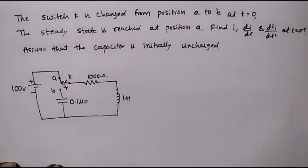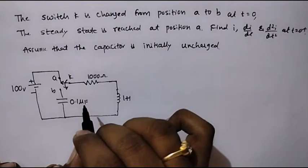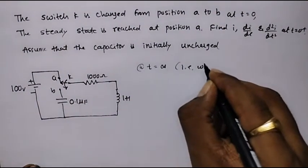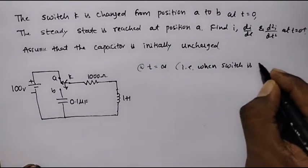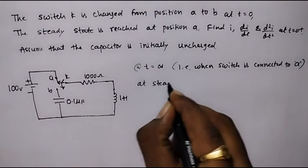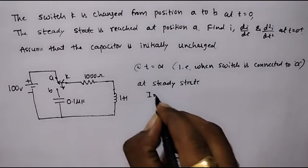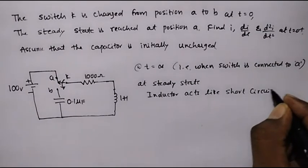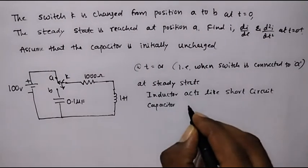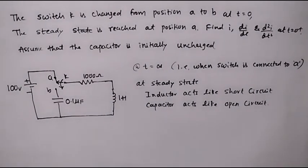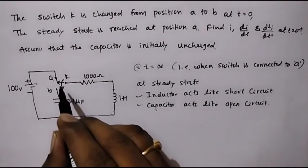First, we will draw the circuit showing how it behaves at steady state — that is, at t equal to infinity — when switch K is connected to A. At steady state, the inductor acts like a short circuit and the capacitor acts like an open circuit. We must know these two conditions. Now I will draw the same circuit with the switch connected to A and the circuit in steady state.